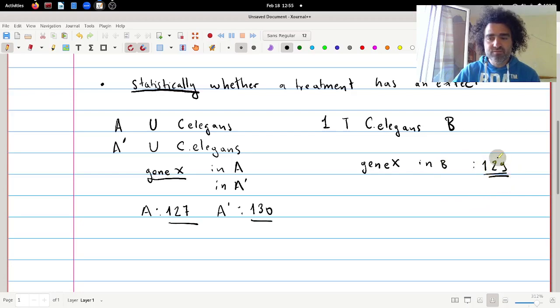So we cannot say actually that this value here is higher than the expression values that we get in untreated animals. So in this case we would say that treatment does not affect the expression level. Of course we need more animals here, we need another B prime here, and it might have 129.5.